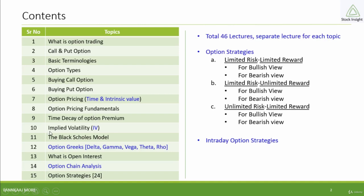Then in the advanced part, the most important topic is implied volatility, then the Black-Scholes model of options, then option Greeks — delta, gamma, vega, theta, rho — all Greeks discussed with examples. Then what is open interest, option chain analysis, how to analyze the option chain, and then 24 option strategies, each strategy discussed with example, payoff chart, and Greeks.